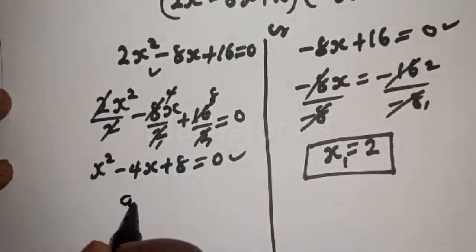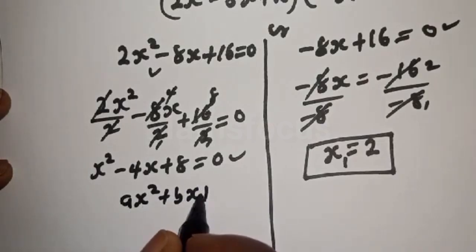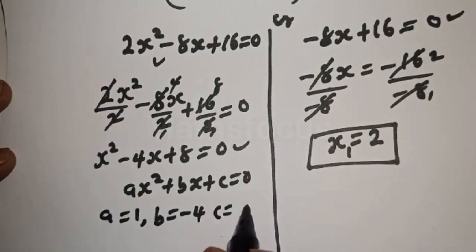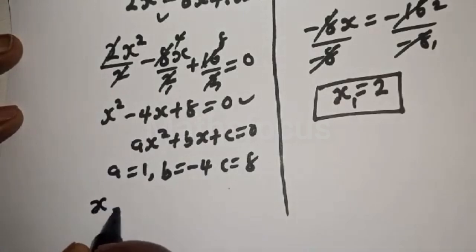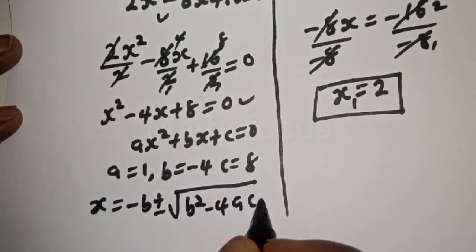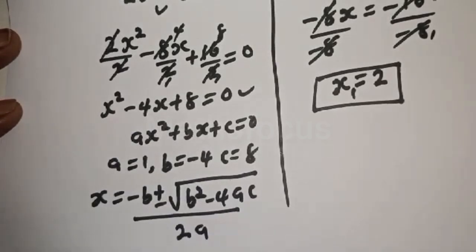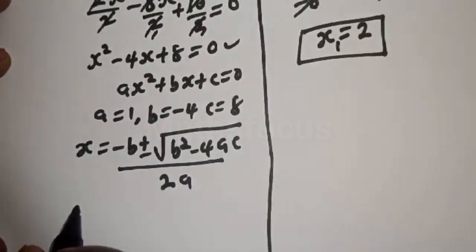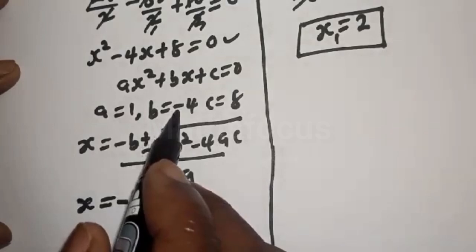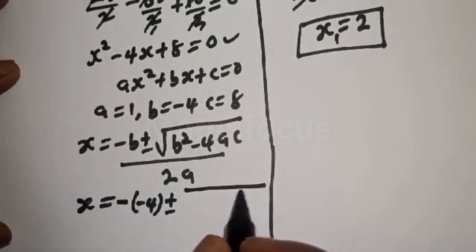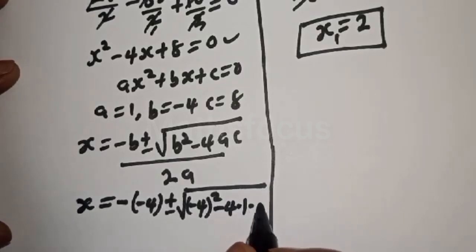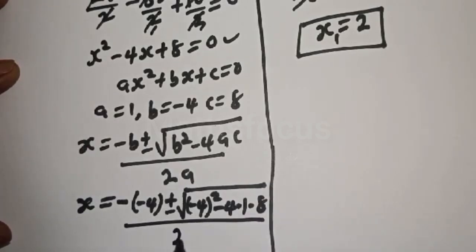The quadratic general formula applies to ax squared plus bx plus c equals zero. Here a equals 1, b equals minus 4, c equals 8. Then x equals minus b plus or minus square root of b squared minus 4ac, all over 2a.